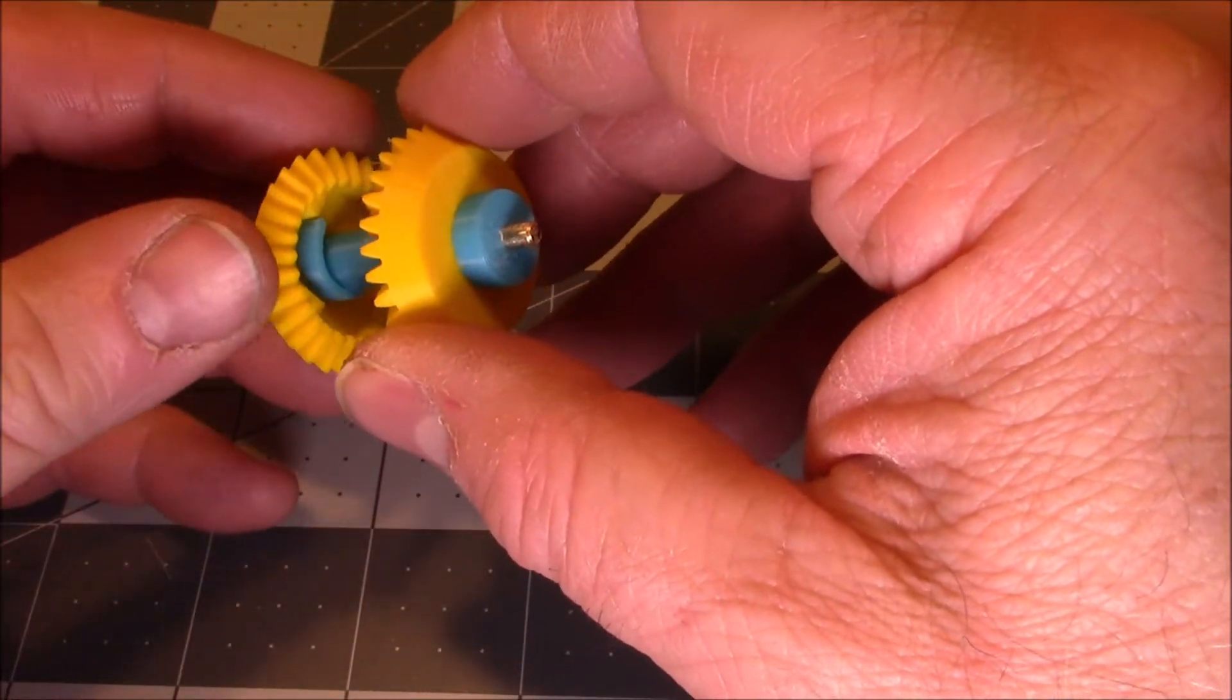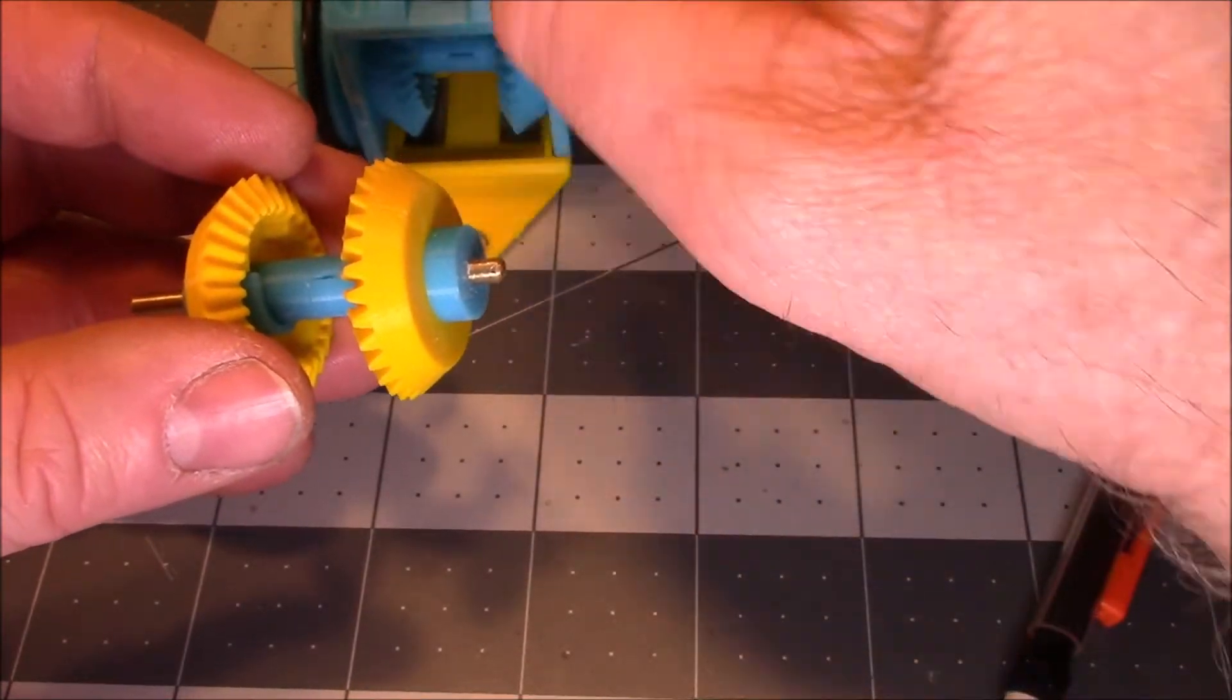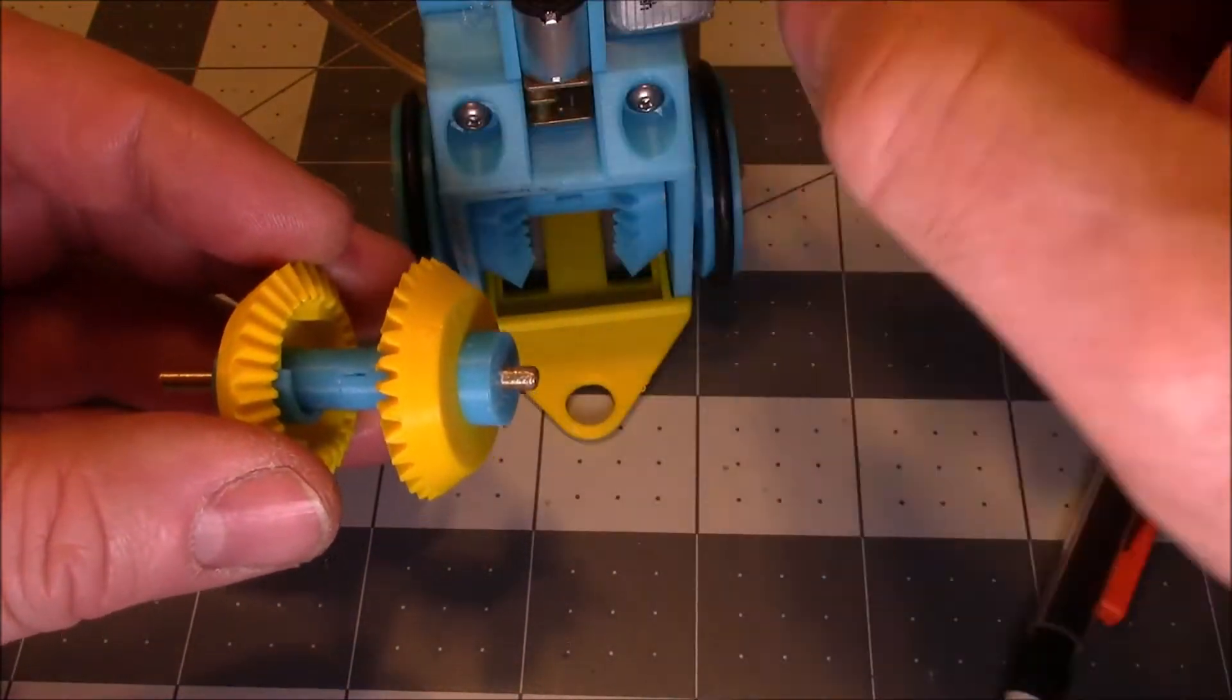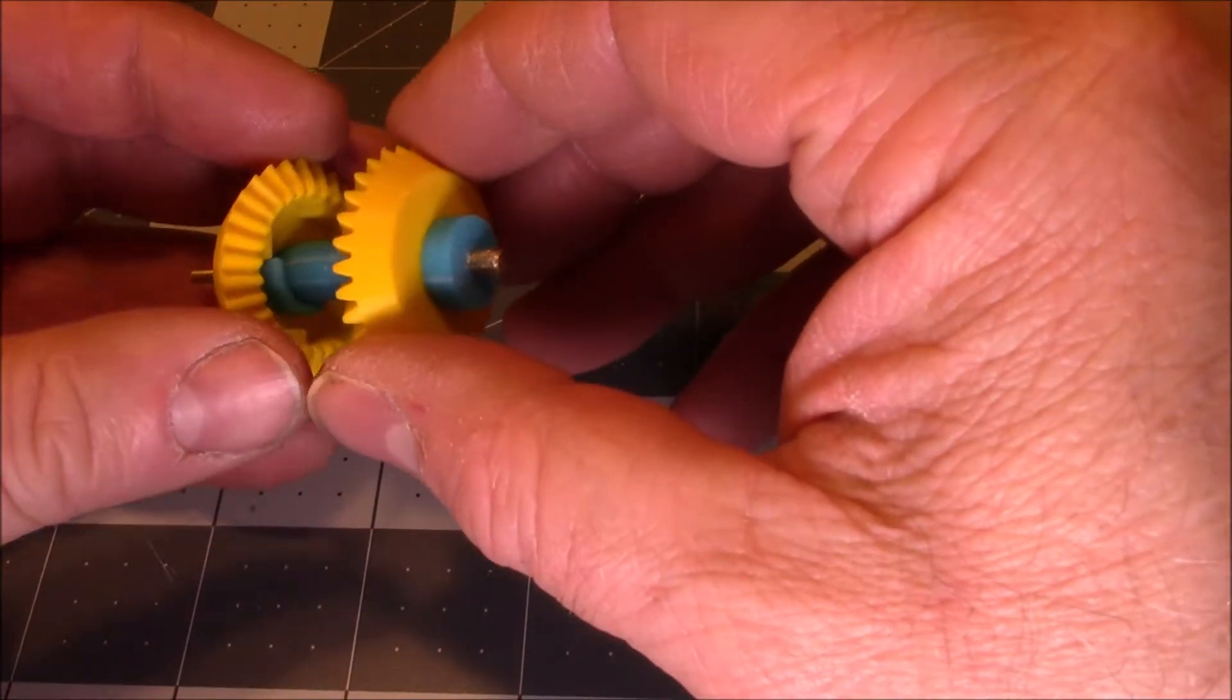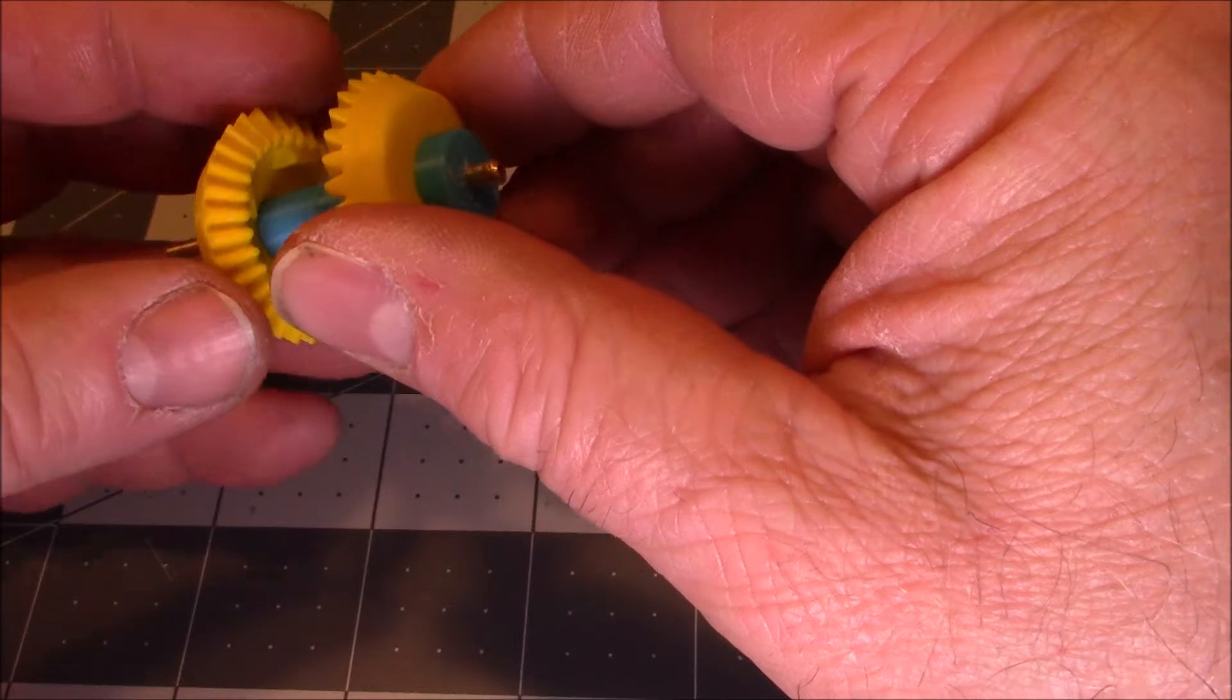So when this gear turns, let's say that this is the gear on this side that drives the wheel. When it turns this way, it catches.